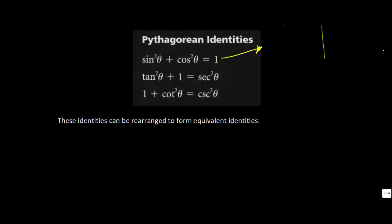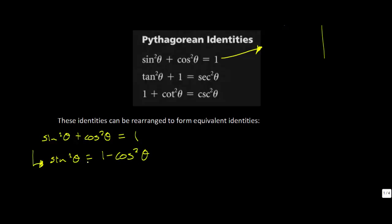What I want you to appreciate is that these identities can be rearranged. Starting with the first one: sine squared theta plus cosine squared theta equals 1. You can rearrange it two ways — isolating for sine squared theta gives 1 minus cosine squared theta, or isolating for cosine squared theta gives 1 minus sine squared theta.